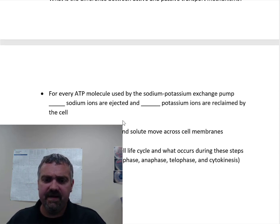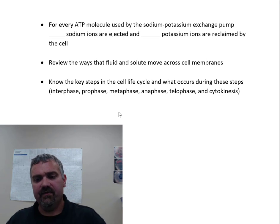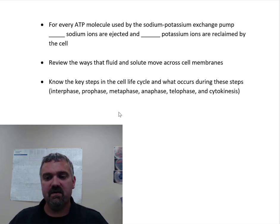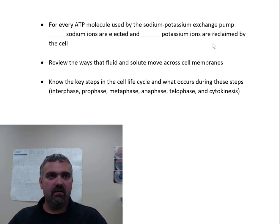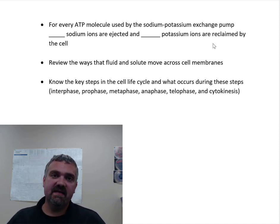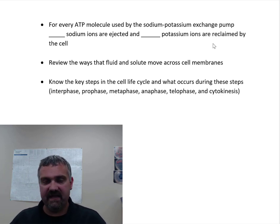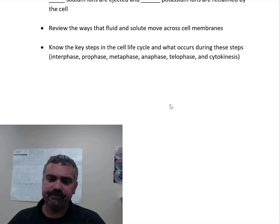For every ATP molecule used by the sodium-potassium exchange pump, three sodium ions are ejected out of the cell and two potassium ions are pumped in. Sodium is Na+ and potassium is K+ — they're both positive ions or cations. This generates the voltage differences that allow our nerves to send and receive electrical impulses.